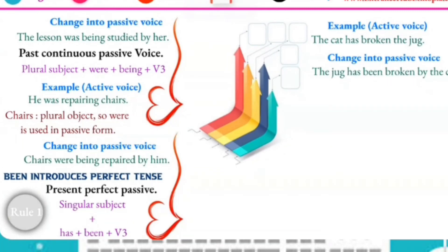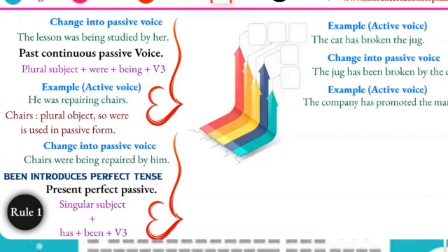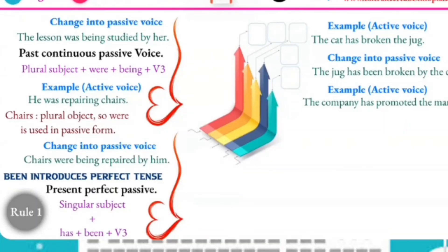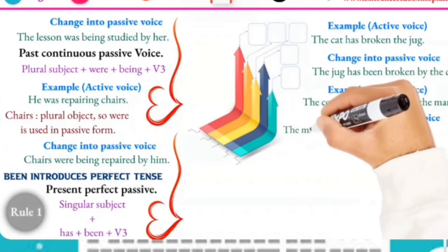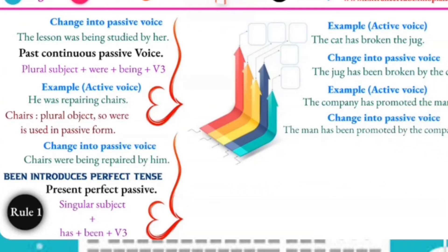Another example: 'The company has promoted the man' — active form. To form the passive, the object 'the man' becomes the subject. So the passive form is: 'The man has been promoted by the company.' The original subject 'the company' moves to the 'by' phrase.